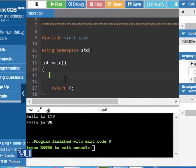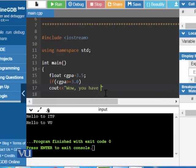We need to say float CGPA is assigned 3.5. What does it mean? There will be a memory location in RAM that will be referenced with the name CGPA and the 3.5 value will be assigned to that CGPA variable. Then we are saying if CGPA is greater than or equal to 3.0, then cout wow, you have qualified for the scholarship.